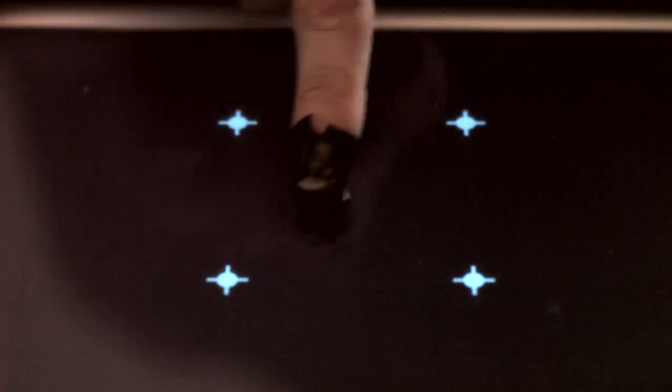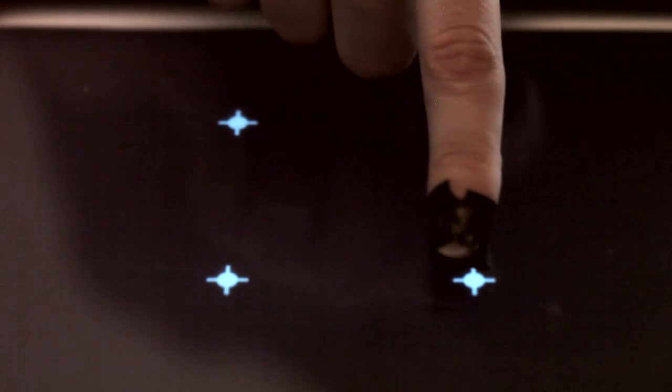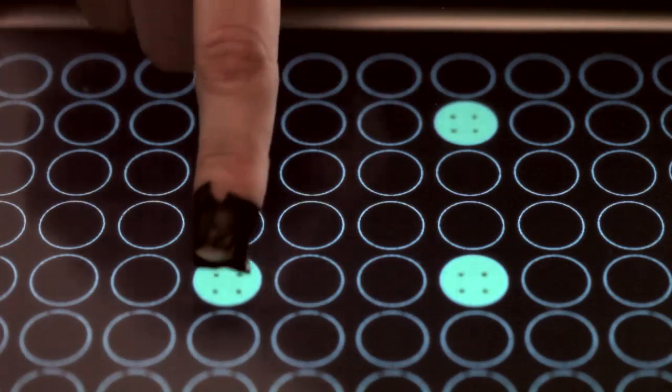Another example is Snap to Grid, a well-known concept from graphical user interfaces. Finger Flux can bring this technique to interactive tables. Whenever you get near one of the white dots, your finger snaps to it.